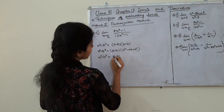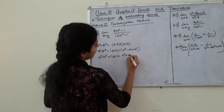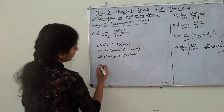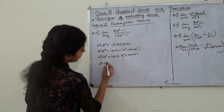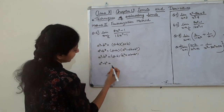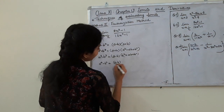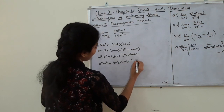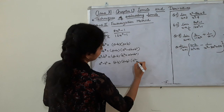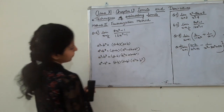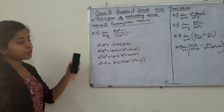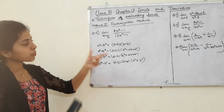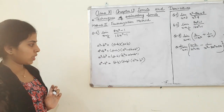Let us recall the formulas: a³ - b³ = (a - b)(a² + ab + b²), and a⁴ - b⁴ = (a - b)(a + b)(a² + b²). These are the formulas we already know and will use to solve this.